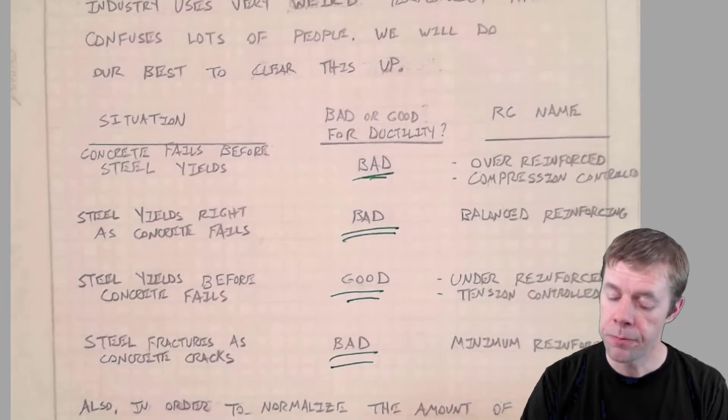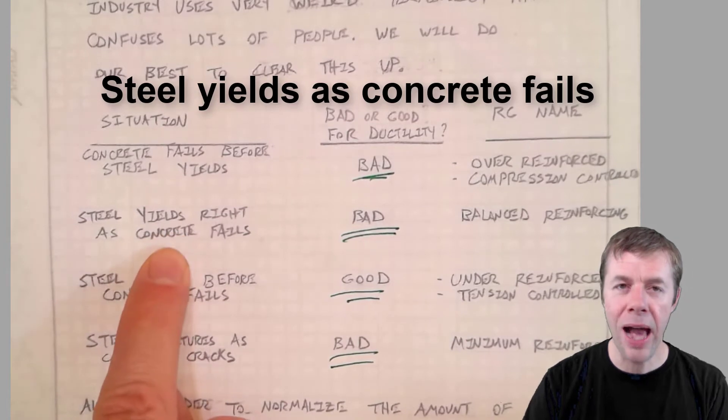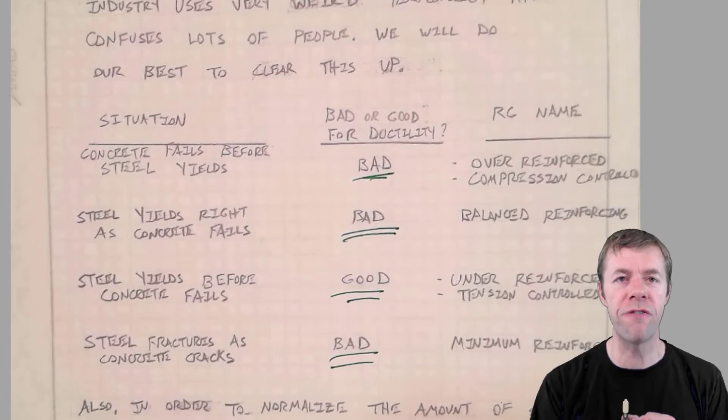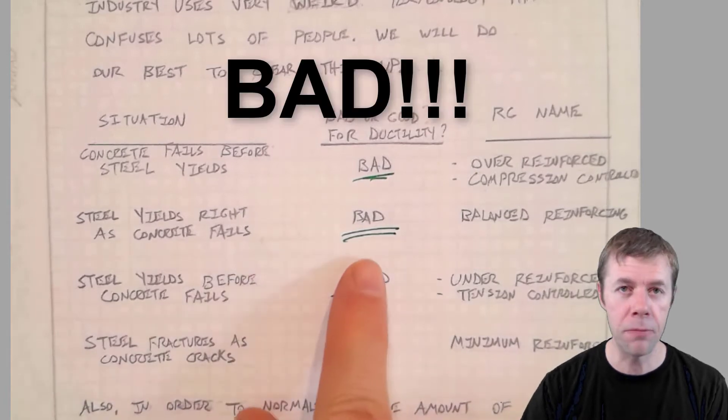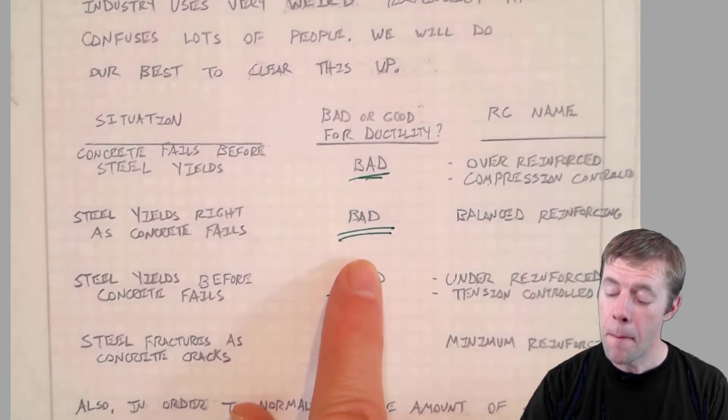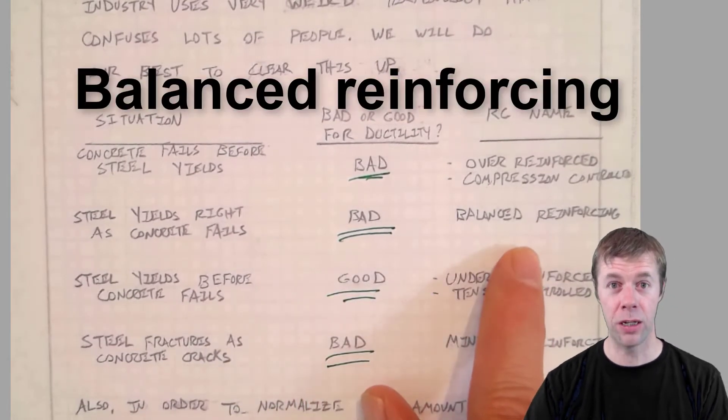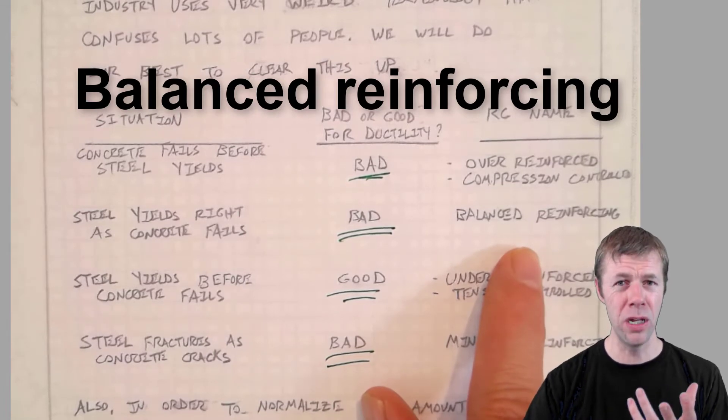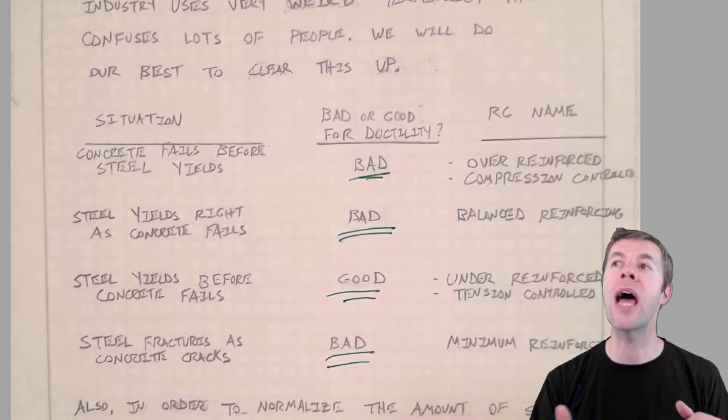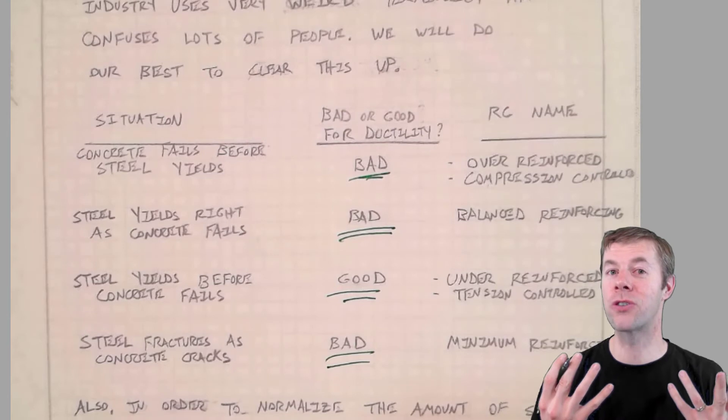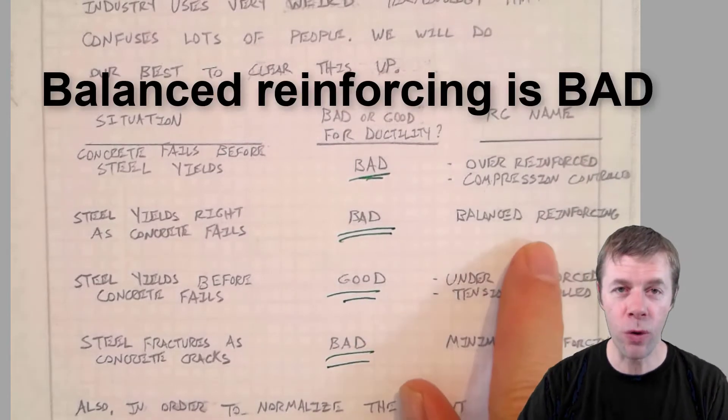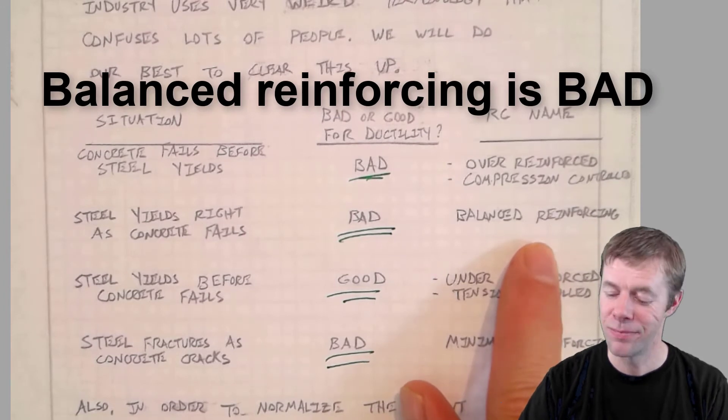Then there's another situation. The steel can yield right as the concrete fails. The steel just begins to yield as the concrete starts to fail. This is also bad. Bad. Not good. We don't want this. And this is called in the concrete world balanced reinforcing. Balanced. Isn't balance good? I mean don't you hear all kinds of you want a balanced diet right? You want to have a balanced life. You want to have balance with the force. Right? Balanced reinforcing. That's bad. You don't want that.